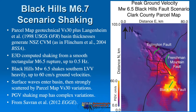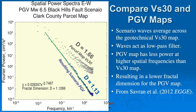Using that peak ground velocity map — as Will Saverin analyzed in 2012 for a regional meeting — where the parcel map has a fractal dimension of 1.66, we get a notably lower fractal dimension of 1.13 from the resulting scenario PGV map. The waves are acting as a low-pass filter, averaging across the geotechnical VS-30 map and removing some of that very short wavelength variation.